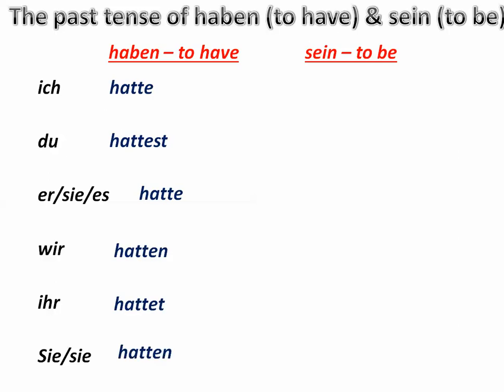Sein in the present tense — hopefully you're familiar with that — is Ich bin, Du bist, Er ist, Wir sind, Ihr seid, Sie sind. But if we're going to work with it in the simple past, we change it to War: Ich war (I was), Du warst (you were), Er war (he was), Wir waren (we were), Ihr wart (you all were), Sie waren (they were).